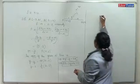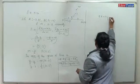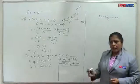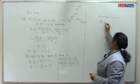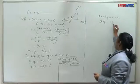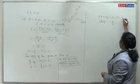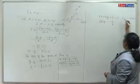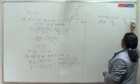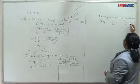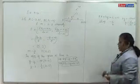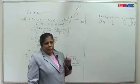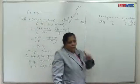From the general form ax plus by plus c equals 0, rearranging gives by equals minus ax minus c, so y equals (-a/b)x minus c/b. Comparing with y equals mx plus c, the slope is minus a by b.